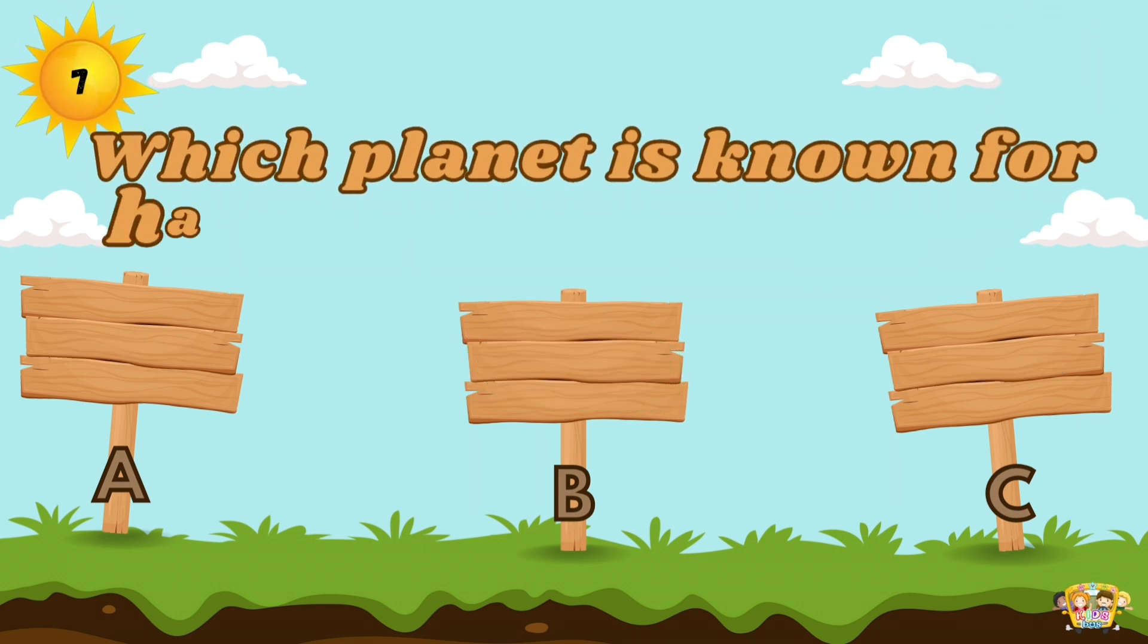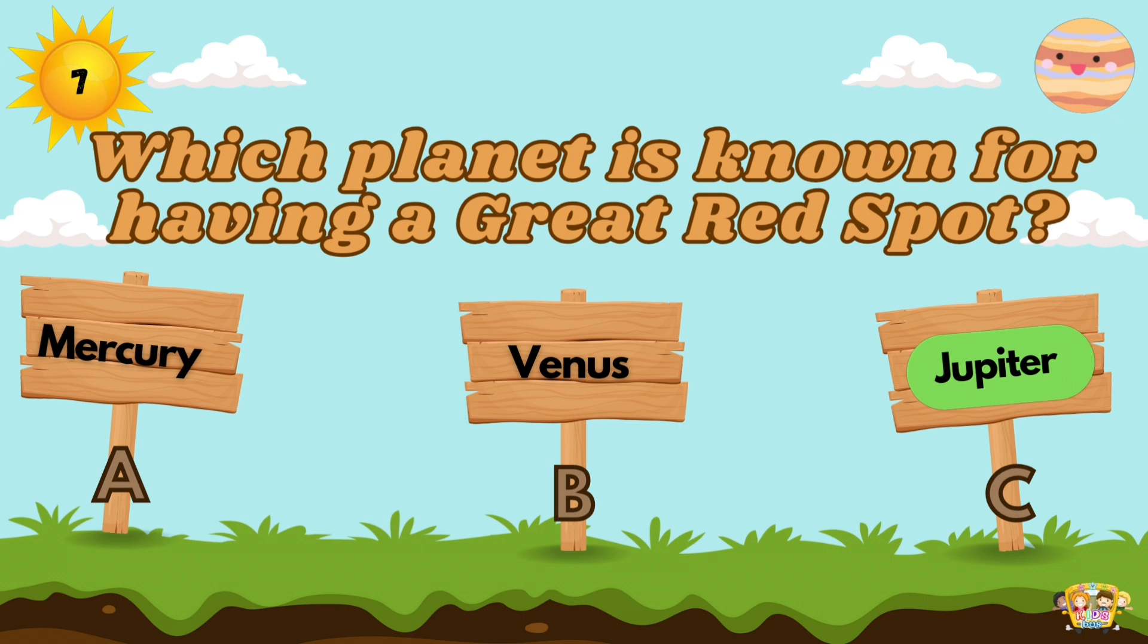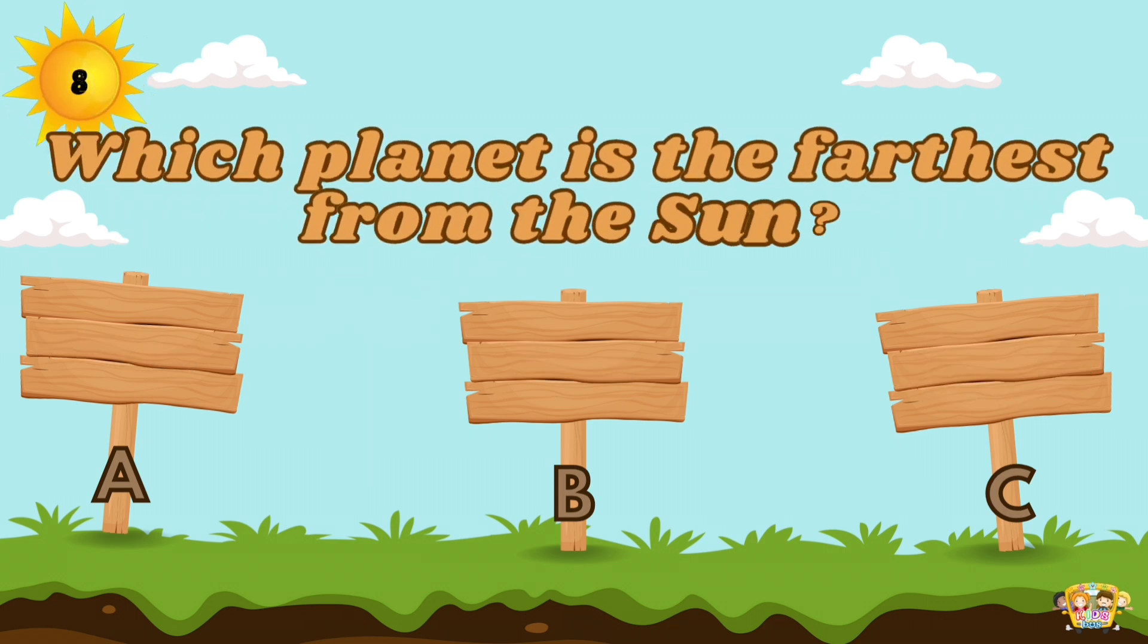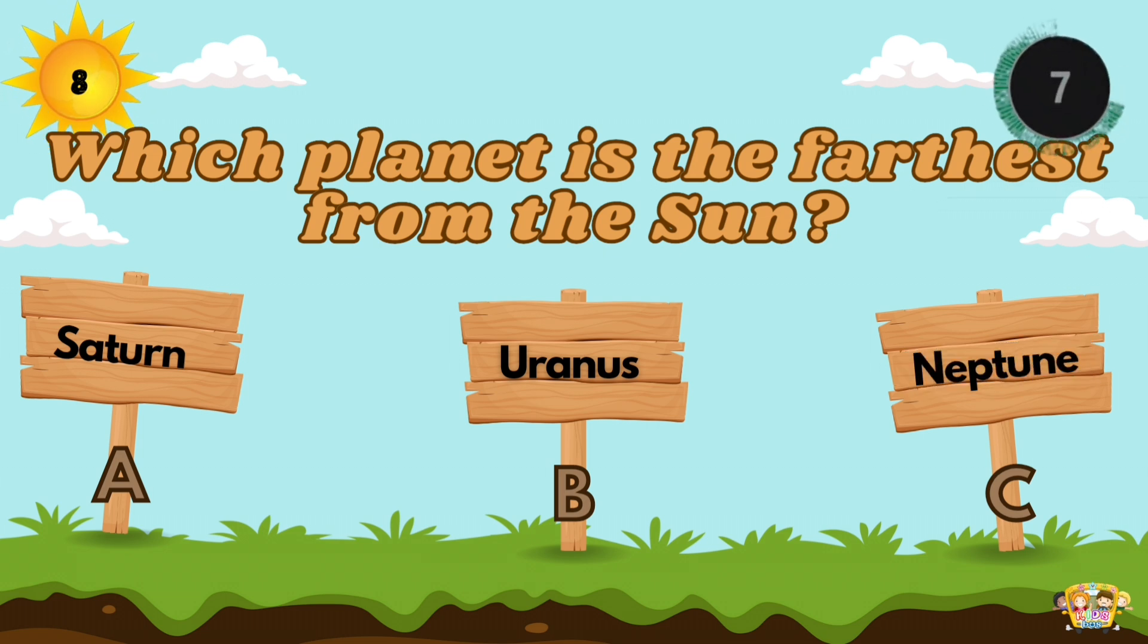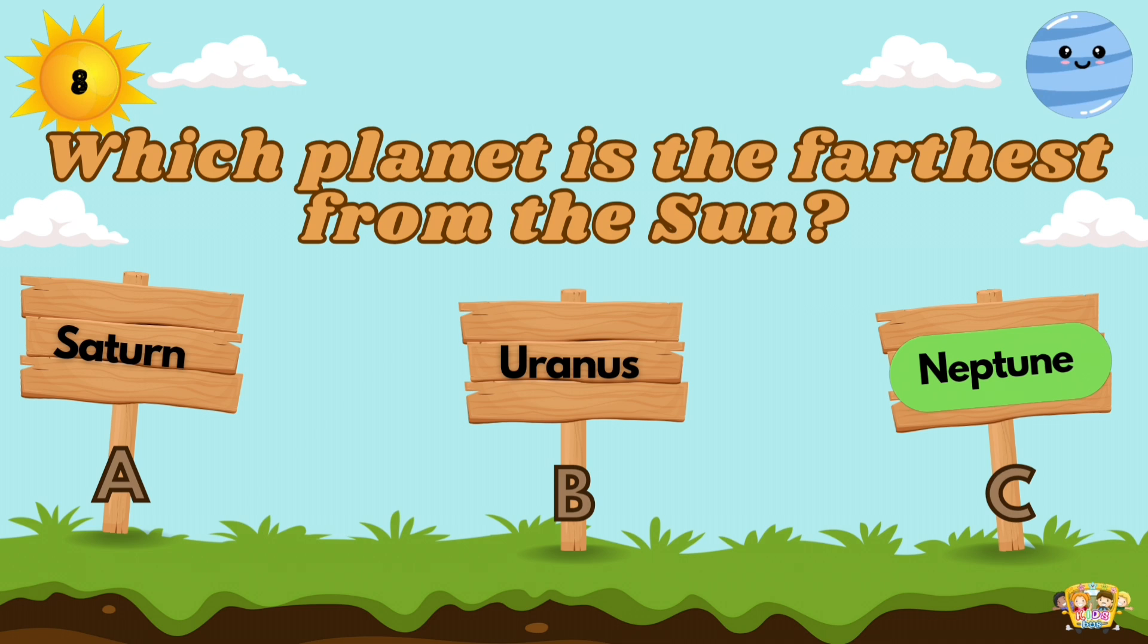Which planet is known for having a great red spot? The great red spot is a persistent high-pressure region in the atmosphere of Jupiter. Which planet is the farthest from the Sun? Neptune is the farthest planet from the Sun.